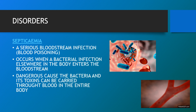Septicemia is a serious bloodstream infection, also known as blood poisoning. It occurs when a bacterial infection elsewhere in the body — such as in the lungs or skin — enters the bloodstream. This is dangerous because the bacteria and their toxins can be carried through the bloodstream to your entire body.